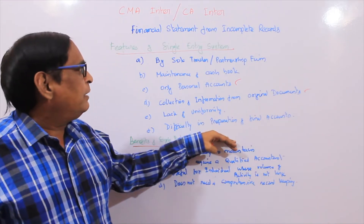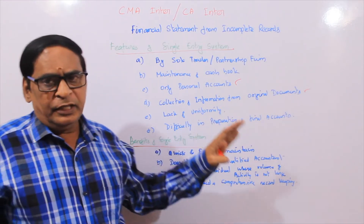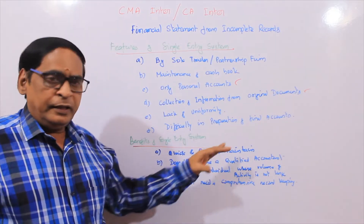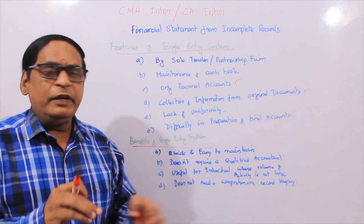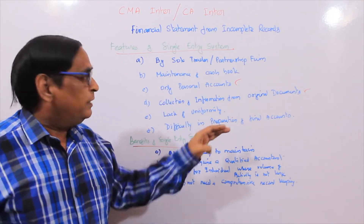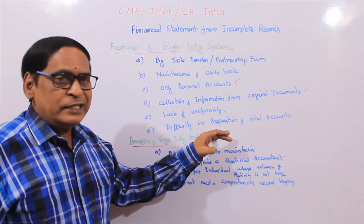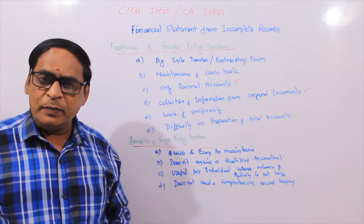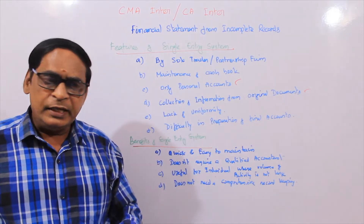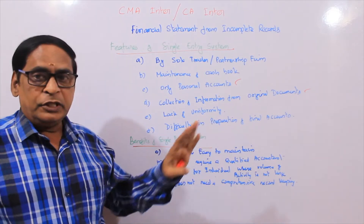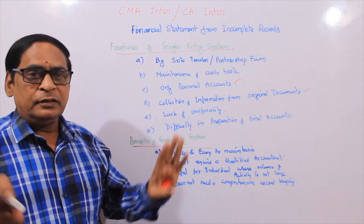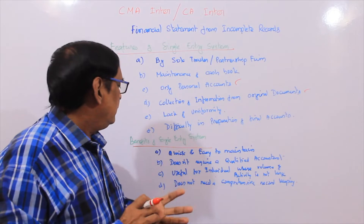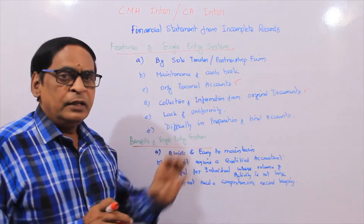If you see this system compared to double entry, you can't derive accurate results. It is just an unscientific method and an inaccurate method. That's all.